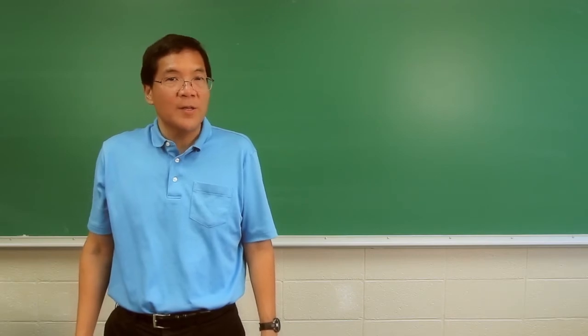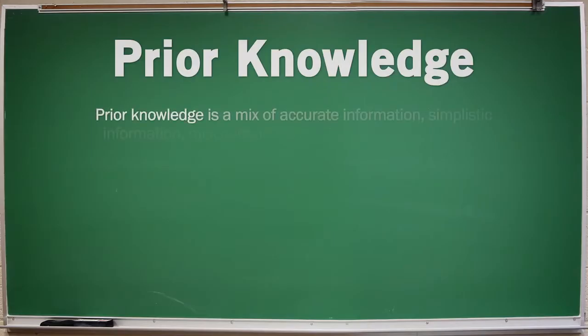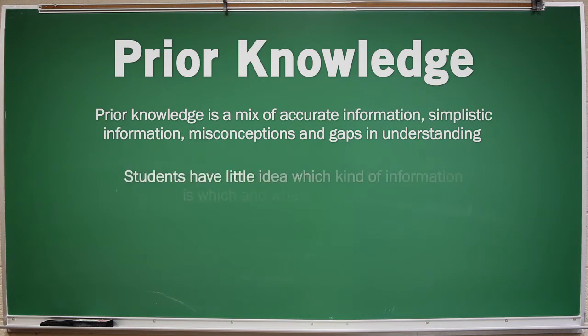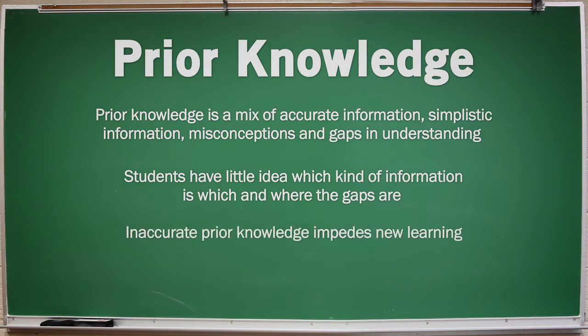But prior knowledge is a double-edged sword. For most students, their prior knowledge is a mix of accurate information, simplistic information, misconceptions, and gaps in understanding. Students don't know which kind of information is which and where the gaps are. Inaccurate prior knowledge impedes new learning.